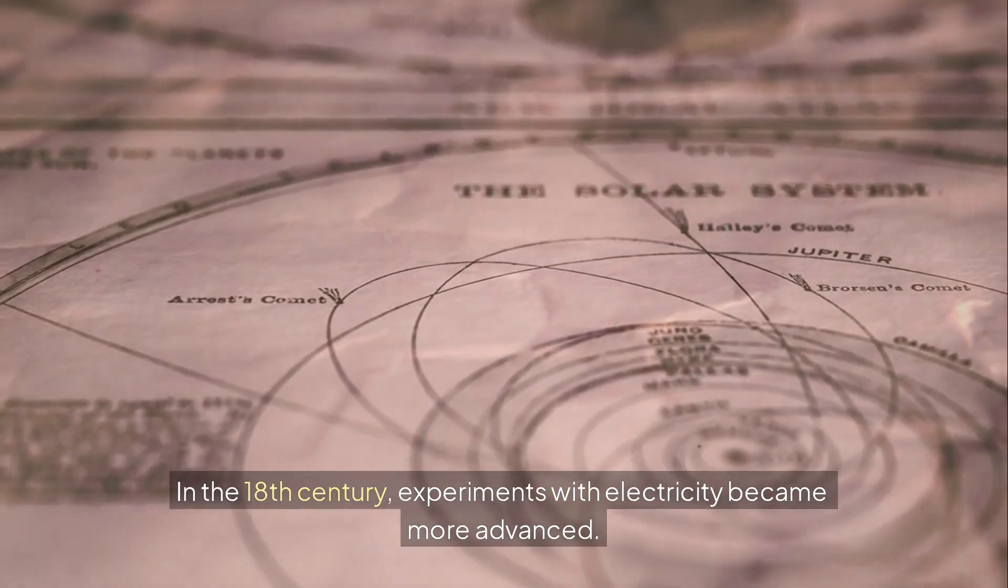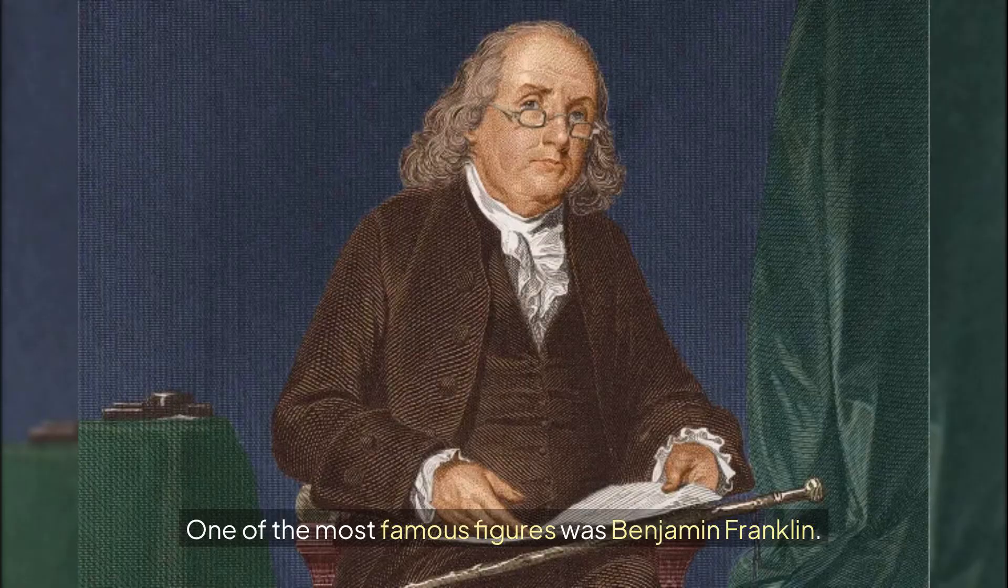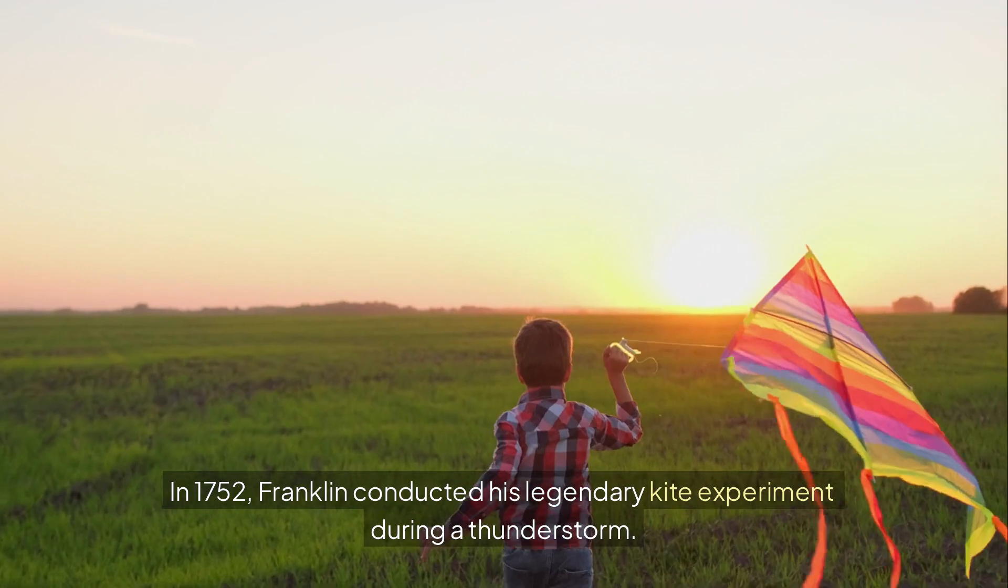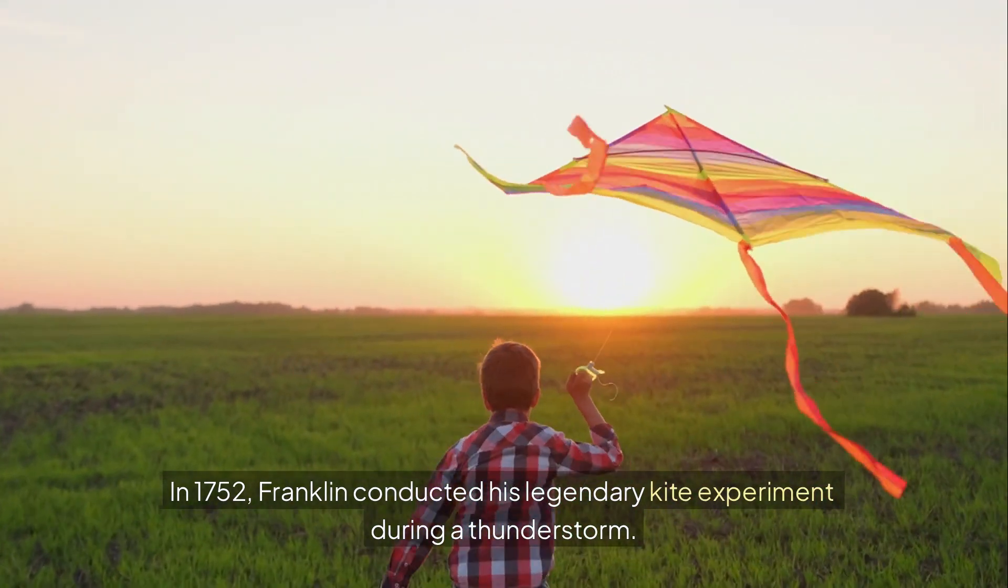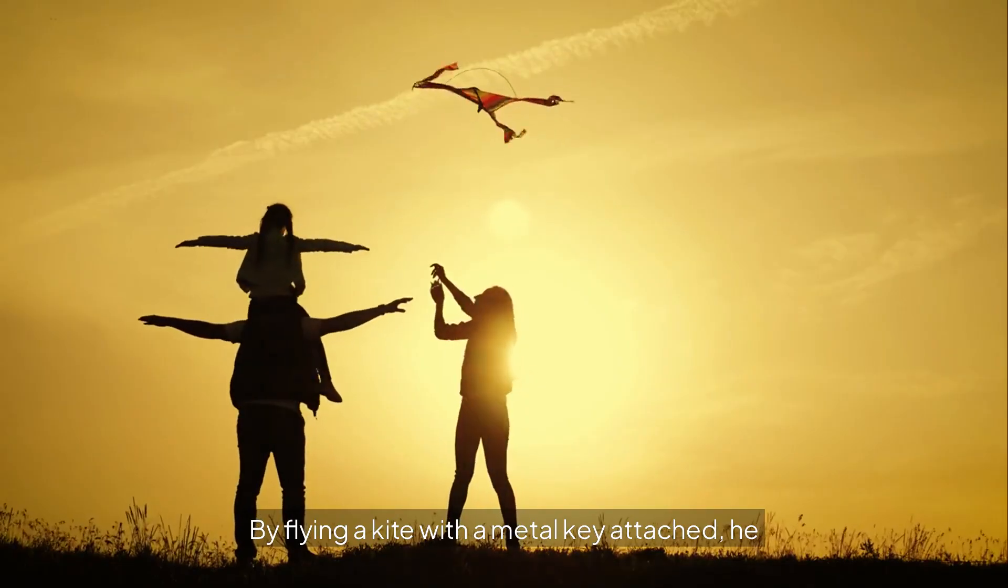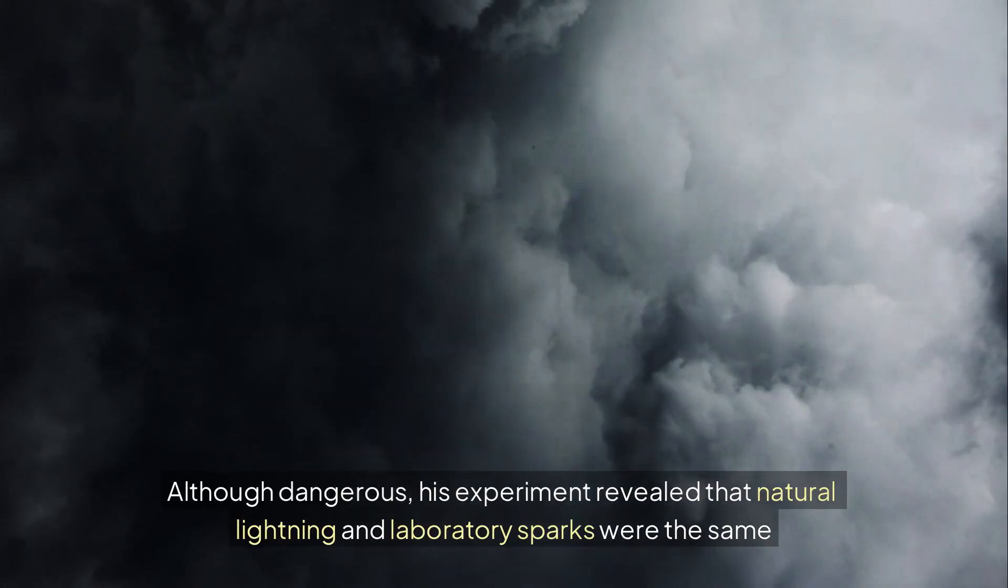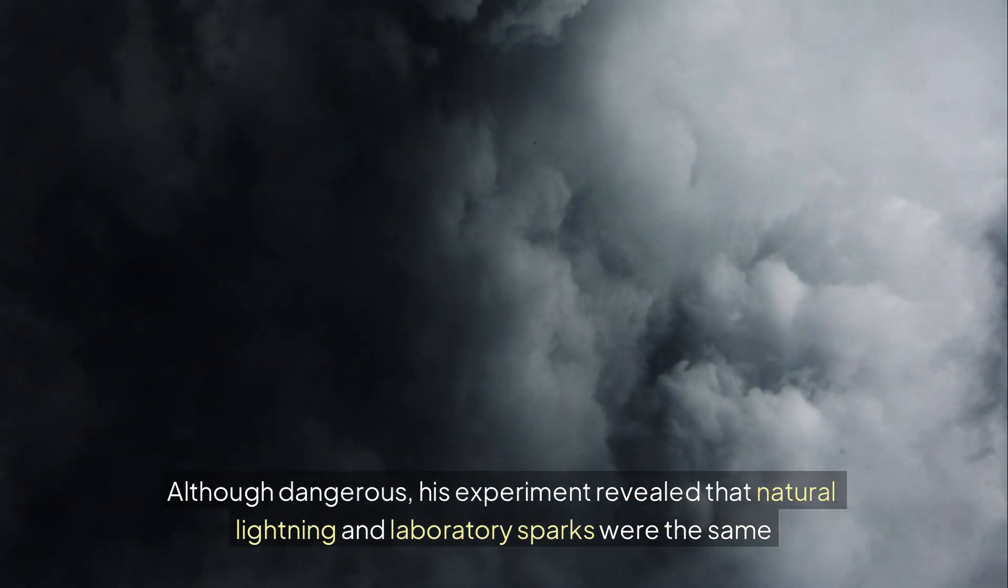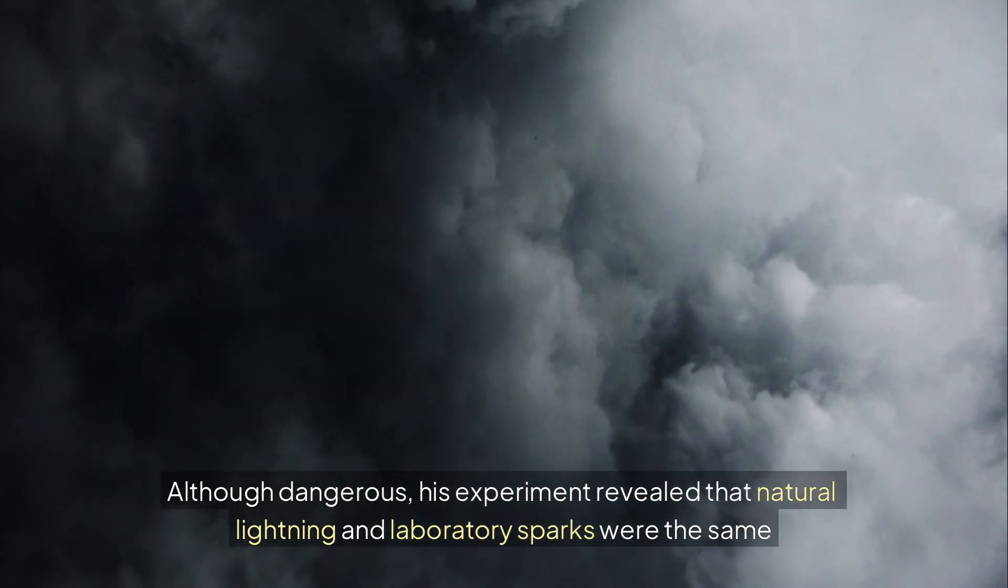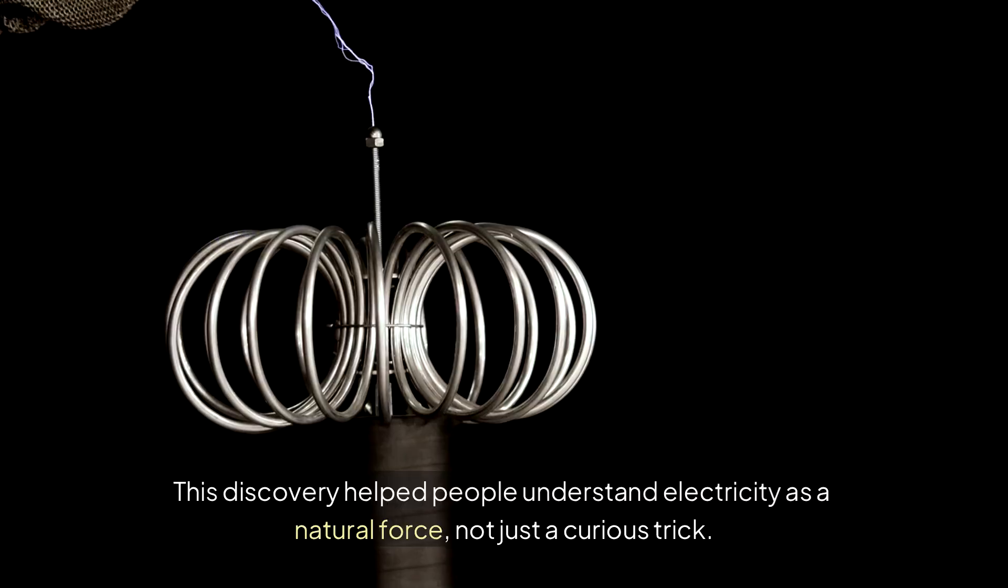In the 18th century, experiments with electricity became more advanced. One of the most famous figures was Benjamin Franklin. In 1752, Franklin conducted his legendary kite experiment during a thunderstorm. By flying a kite with a metal key attached, he demonstrated that lightning was a form of electrical discharge. Although dangerous, his experiment revealed that natural lightning and laboratory sparks were the same phenomenon. This discovery helped people understand electricity as a natural force, not just a curious trick.